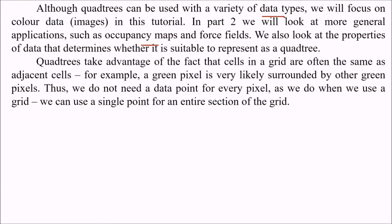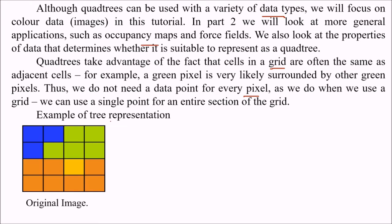Quad trees take advantage of the fact that cells in a grid are often the same as adjacent cells. For example, a green pixel is very likely surrounded by other green pixels, so we do not need a data point for every pixel as we do when we use a grid. We can use a single point for an entire section of the grid. Let us see a pictorial example of tree representation.